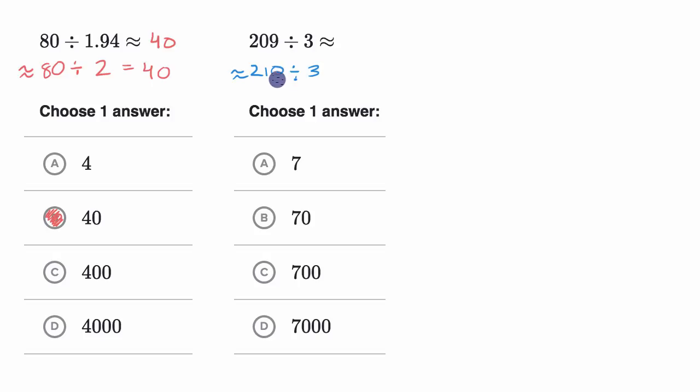Now why is this interesting? Well, 210 is just 21 times 10. So if 21 divided by three is seven, 210 divided by three is going to be equal to 70.